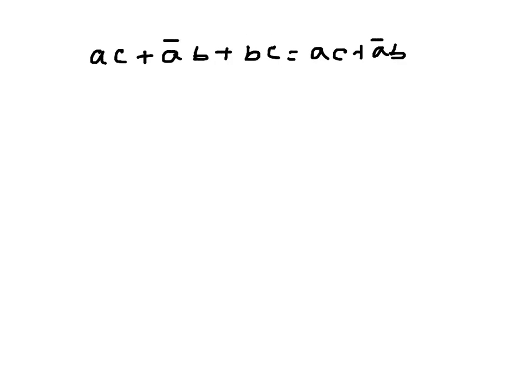This is what I have to prove, so I'm starting from left-hand side: AC plus A̅B plus BC. Now when you look at the right-hand side, the right-hand side is same as the first two terms. So what I will try to do is...